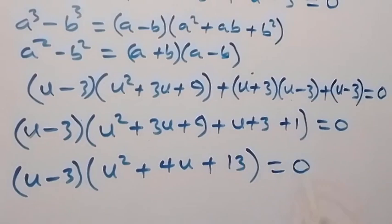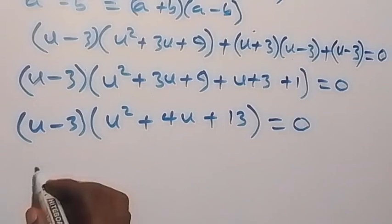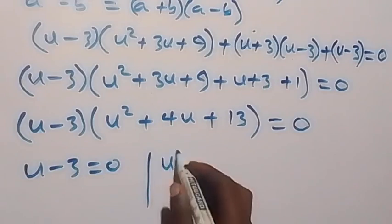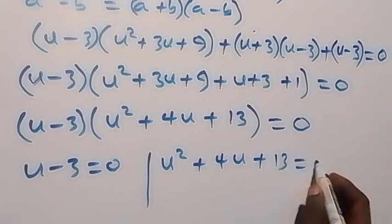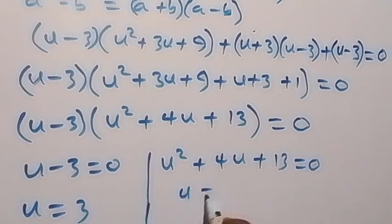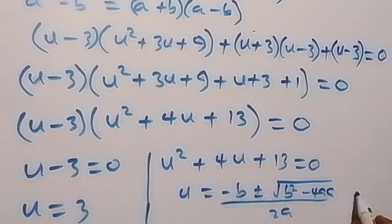Simplifying inside the bracket: u squared plus 4u plus 13. So we have (u minus 3)(u squared plus 4u plus 13) equals zero. This gives two possible cases: u minus 3 equals zero, or u squared plus 4u plus 13 equals zero. On the first case, u equals 3. For the second case, we use the quadratic formula: u equals minus b plus or minus square root of b squared minus 4ac over 2a, where a is 1, b is 4, and c is 13.